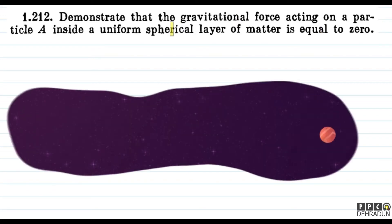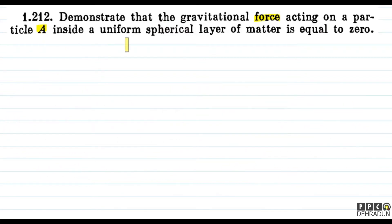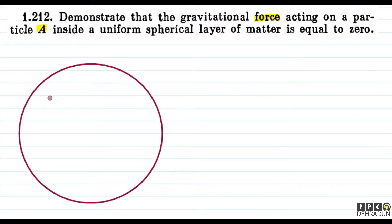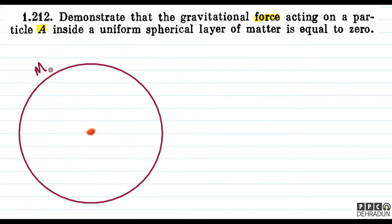The question says: Demonstrate that the gravitational force acting on a particle A inside a uniform spherical layer of matter is equal to zero. So here we have to show that if we have a uniform spherical shell — mass M and radius R — and a particle of mass m somewhere inside, then the net force on it is zero.